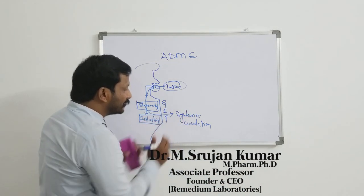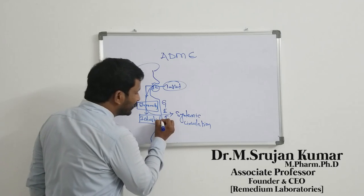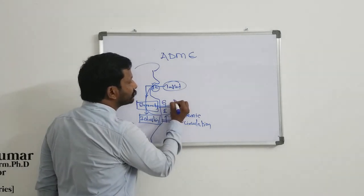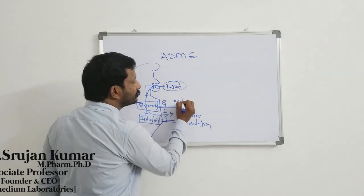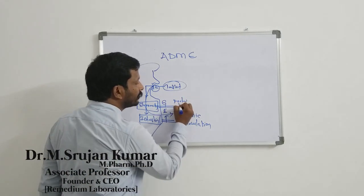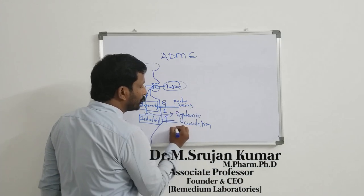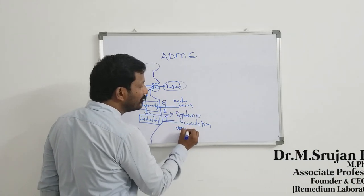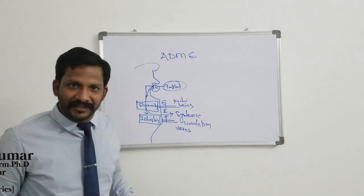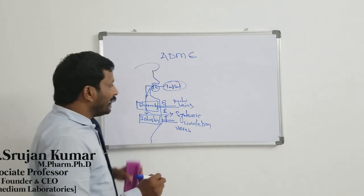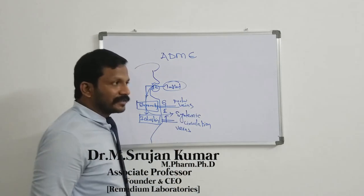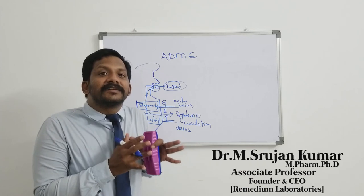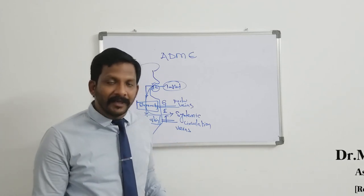In what way will it enter into systemic circulation? Through the portal veins it will enter into systemic circulation. After entering into systemic circulation, what happens there? Your distribution phase starts.